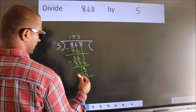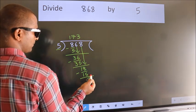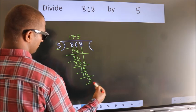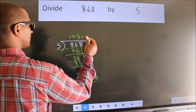Now we subtract. We get 3. No more numbers to bring down, so we stop here. This is our remainder. This is our quotient.